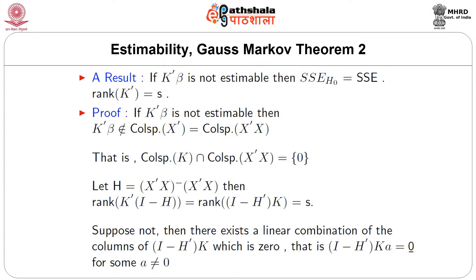A result: if k-transpose beta is not estimable, then SSE under H-naught equals SSE, and rank of k-transpose also equals SSE. Proof: if k-transpose beta is not estimable, then k-transpose beta is not in the column space of X-transpose, which equals the column space of X-transpose X. That is, the column space of k intersected with the column space of X-transpose X is just the trivial singleton set consisting of the zero vector. Let H equal (X-transpose X) g-inverse X-transpose X; then rank of k-transpose (I minus H) equals rank of (I minus H)-transpose k.